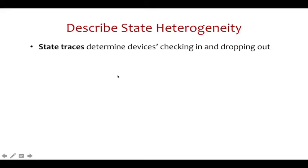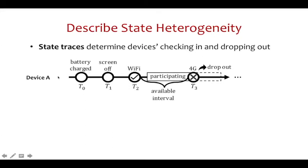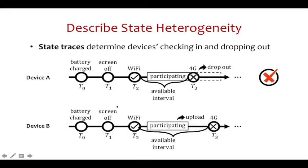State traces determine devices checking in and dropping out. Here is an example about how it works. Suppose device A meets the required states at step 2. After a period of time, it is selected by the server and begins to participate. However, at step 3, its network condition is changed to 4G while it is still participating. As a result, device A drops out and fails to upload its model updates in this round. Similarly, device B finishes its job before its states get changed, so it succeeds in uploading.